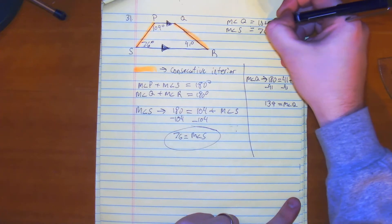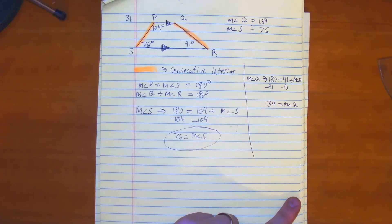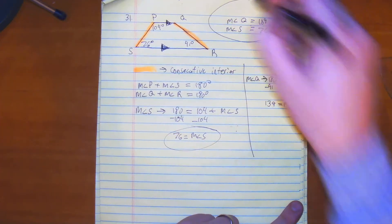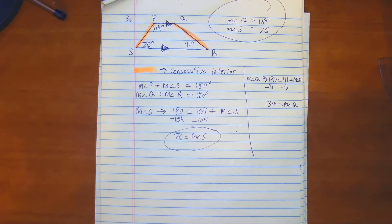There we go, 139. Double check in the calculator, 180 minus 41 is 139. There we go. That is number 31.